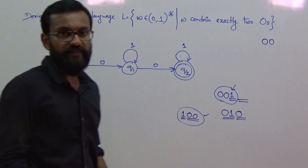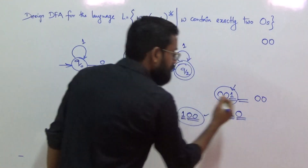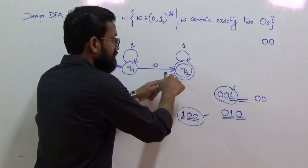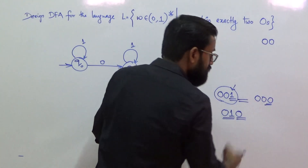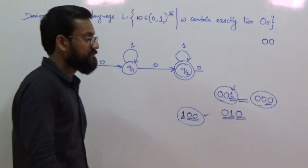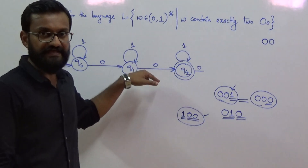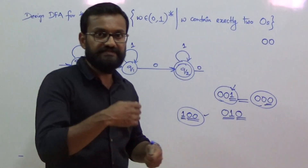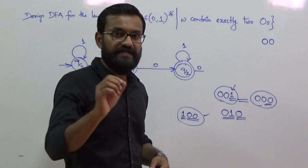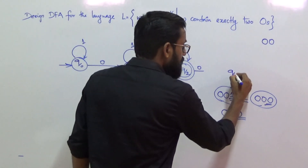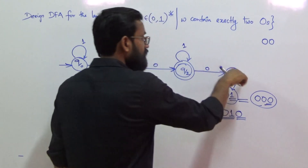Now for state q2, applying input 0: the minimal string to reach q2 from q0 is '00', and adding one more 0 makes the string invariant — it would have three 0s. We cannot add this 0-transition to any existing state, because that would allow the machine to return to the final state and accept an invalid string. Therefore, we add a new state q3, and the 0-transition from q2 goes to q3.